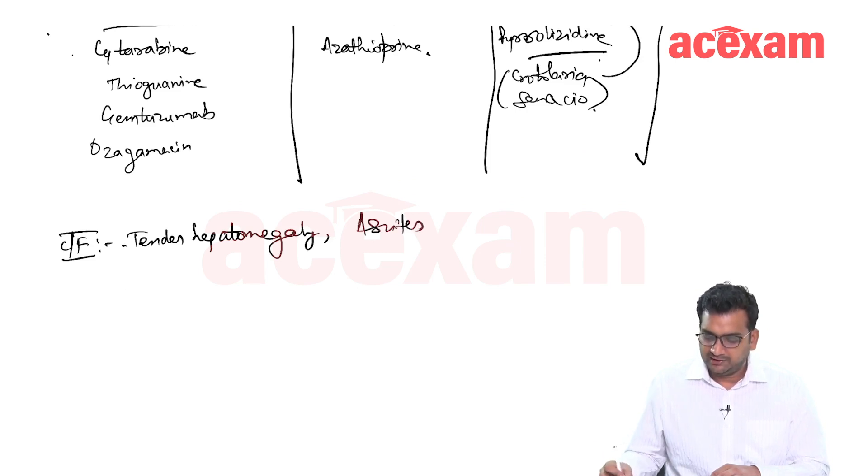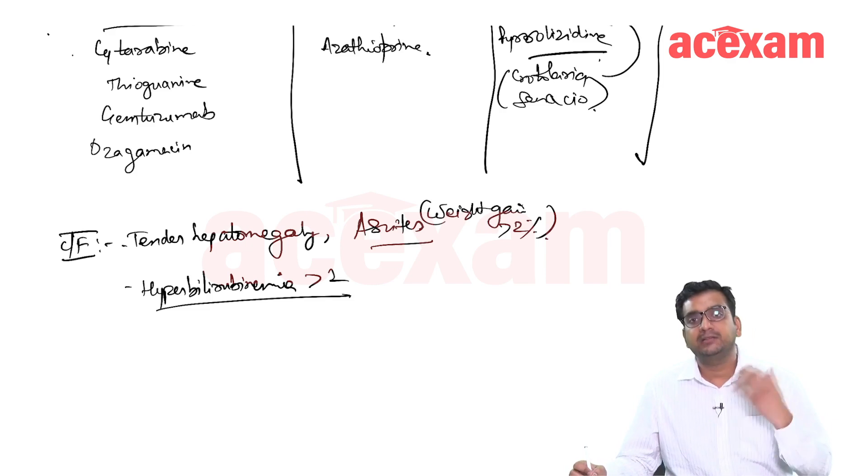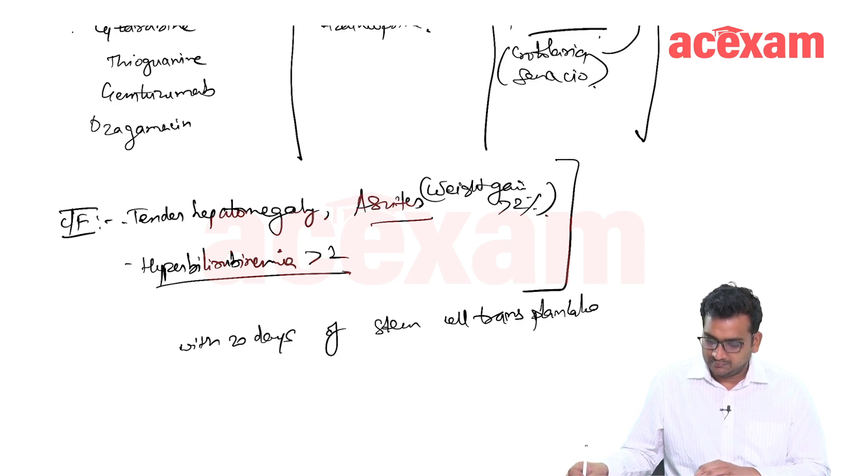Along with that tender hepatomegaly, there is hyperbilirubinemia which is more than 2. If the bilirubin is raised and is more than 2 mg per deciliter, if there is abdominal distension, ascites or a weight gain more than 2%, along with that there is presence of a tender hepatomegaly. If all these 3 factors are there within 20 days of stem cell transplantation it is diagnostic of VOD. This criteria is known as modified Seattle criteria.